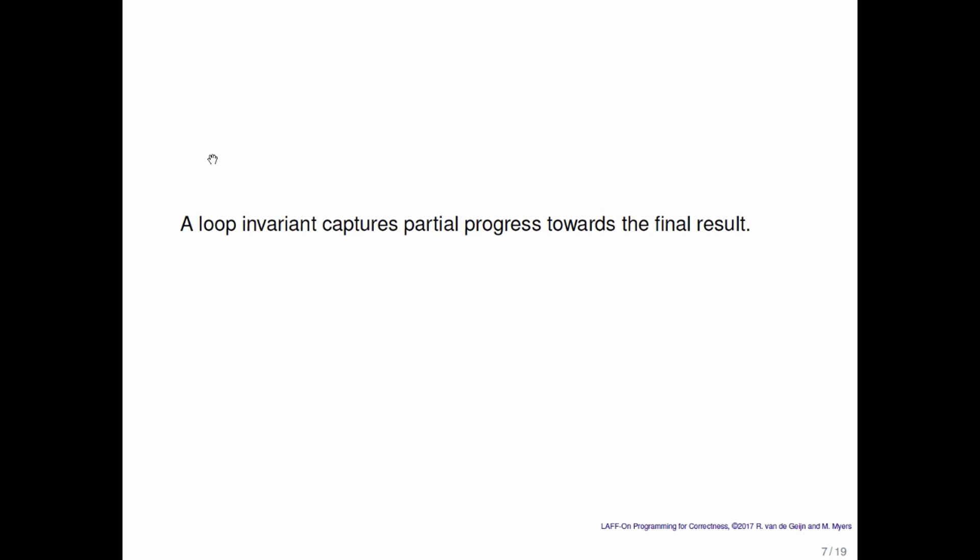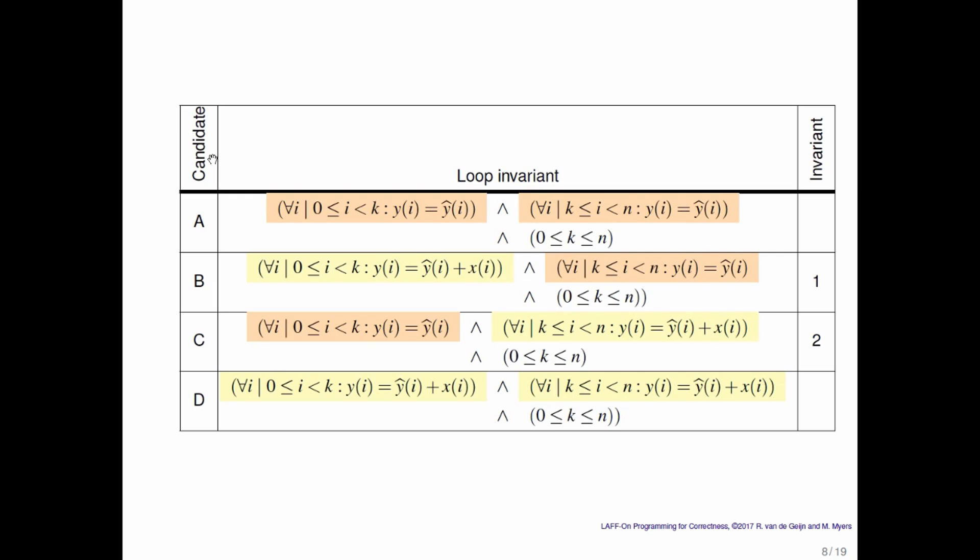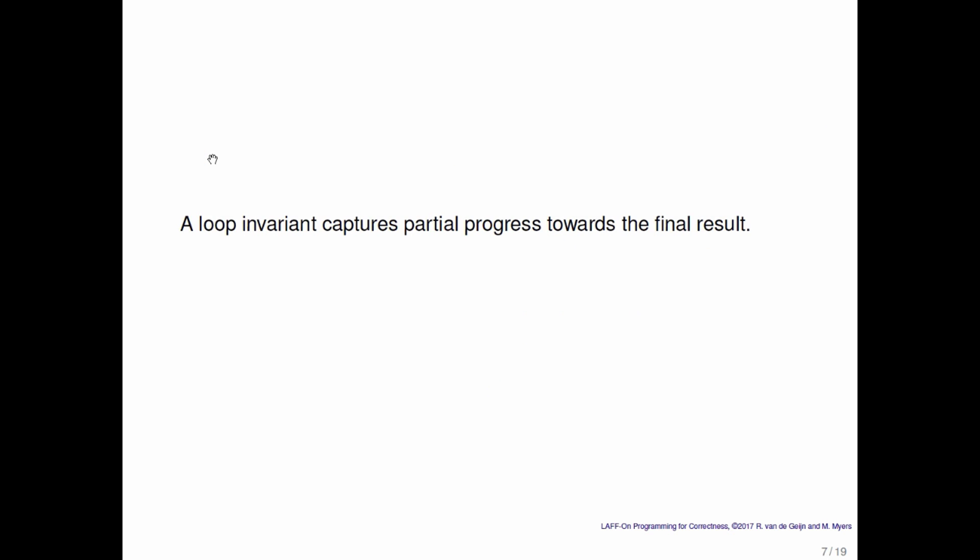So a loop invariant captures partial progress towards the final result. Where does that come from? Well, notice that if the loop is still executing, then inherently you aren't done yet. But hopefully you have done useful computation so far. So what you've computed so far is a partial computation towards the final result.